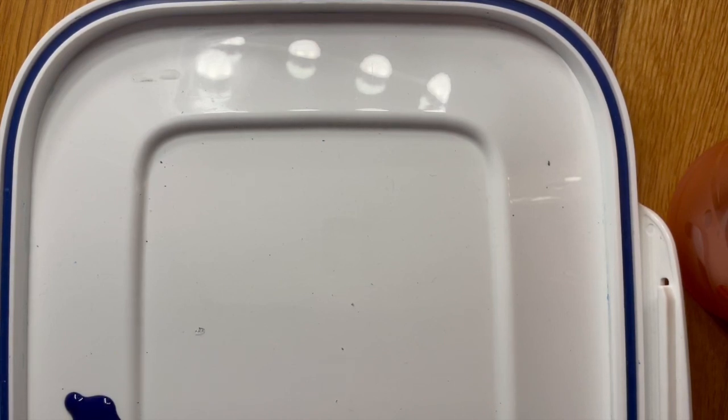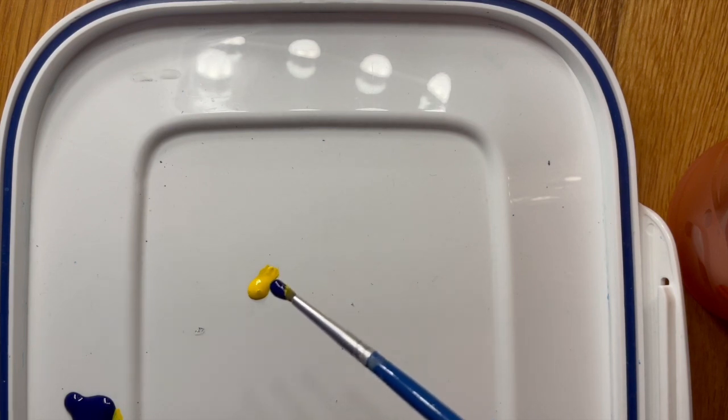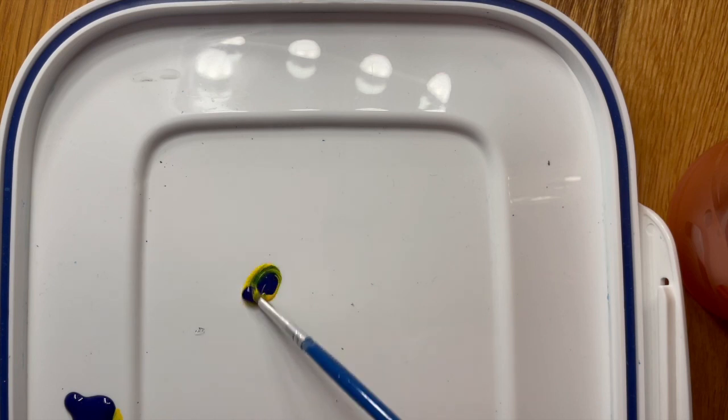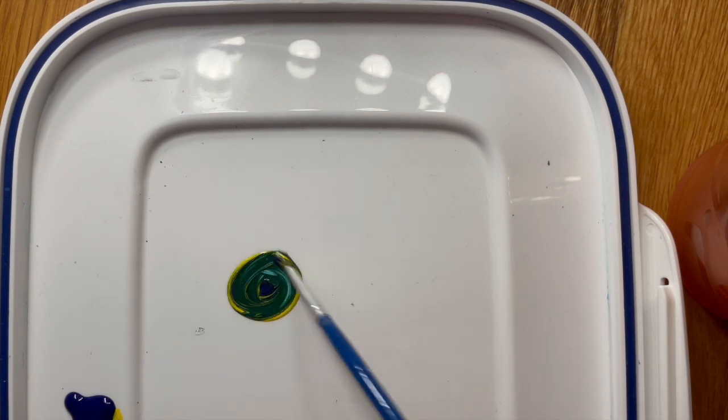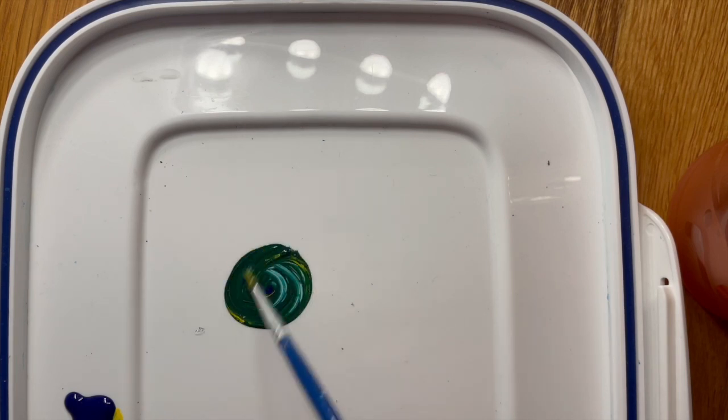If we want to make green paint, we take yellow paint, where again, the blue light is absorbed and the red and green light are reflected and combined, which make yellow light. Then we add blue, where now the red light is also absorbed and green is the only light that reflects through. So here we have green.